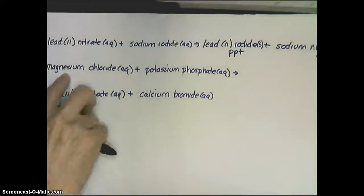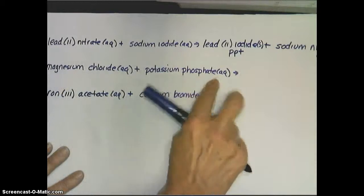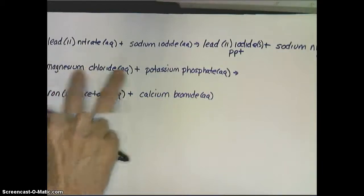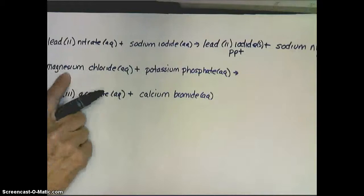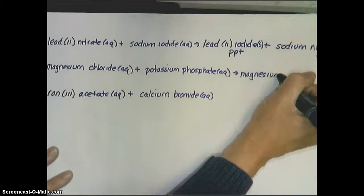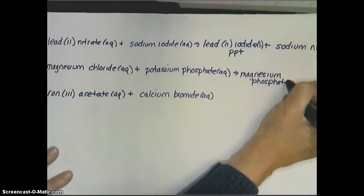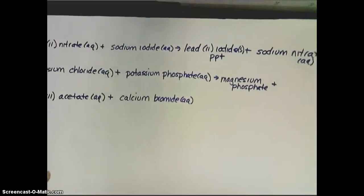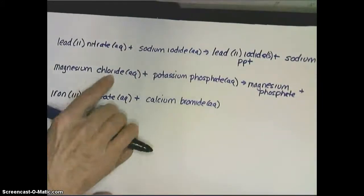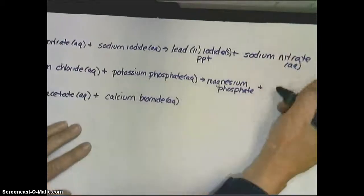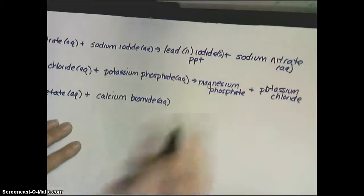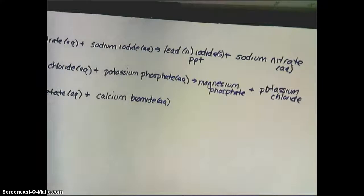Let's try the next one. I have magnesium chloride, aqueous, so it's floating around in solution separately. I have potassium phosphate, also aqueous, floating around in solution separately. Once again, I have a positive and a negative, and a positive and a negative, so they can switch partners. So, magnesium is going to go with what now? It's going to take the phosphate. So, I'm going to write magnesium phosphate. The chloride can go with the potassium — and I remember to write the potassium first — so, potassium chloride. Once again, I have to see if either of these are solids or precipitates.